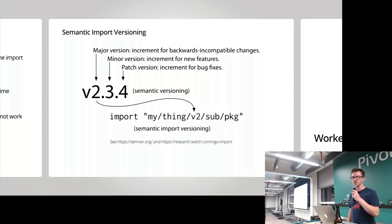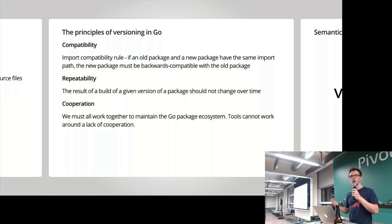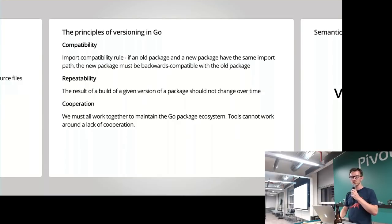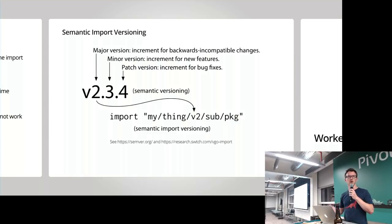The key point here is the concept of semantic import versioning. Going back to the import compatibility rule — if an old and new package have the same import path, the new package must be backwards compatible. What if you've made a breaking change? SemVer tells us we need to bump the major version. In order to retain the import compatibility rule, you'll see the major version number in the import path. This is something you'll see with Go Modules for modules where the version number is two or greater.